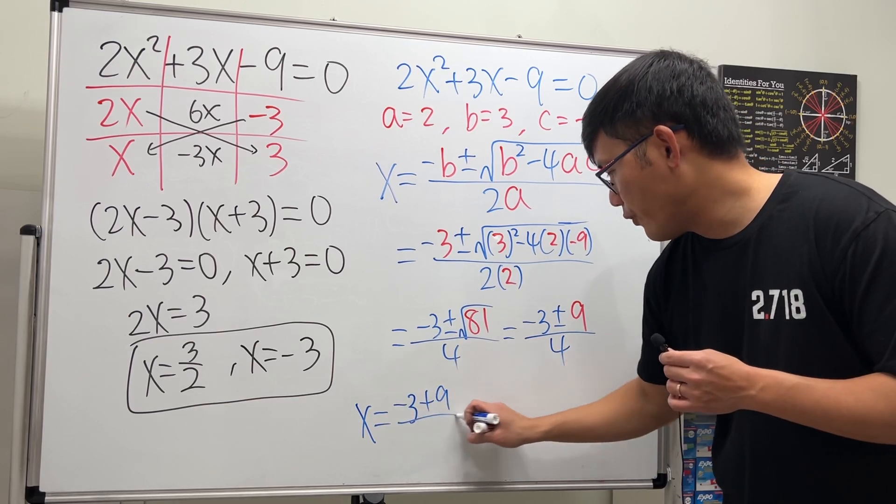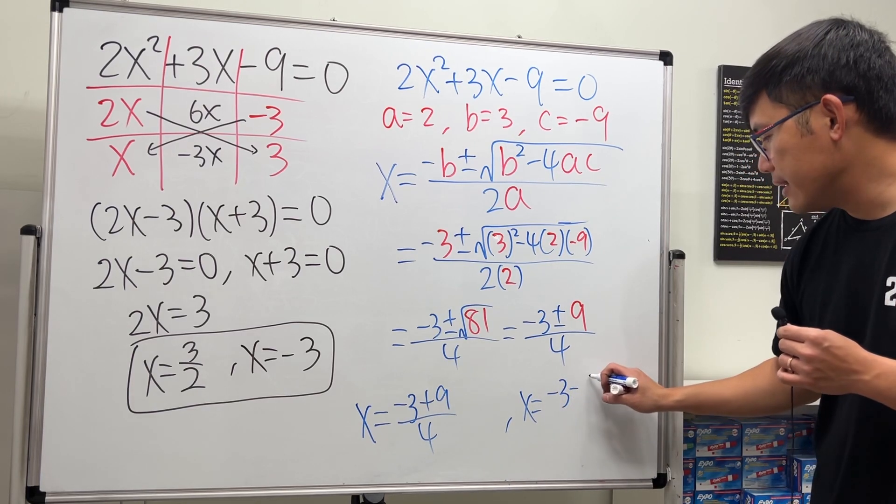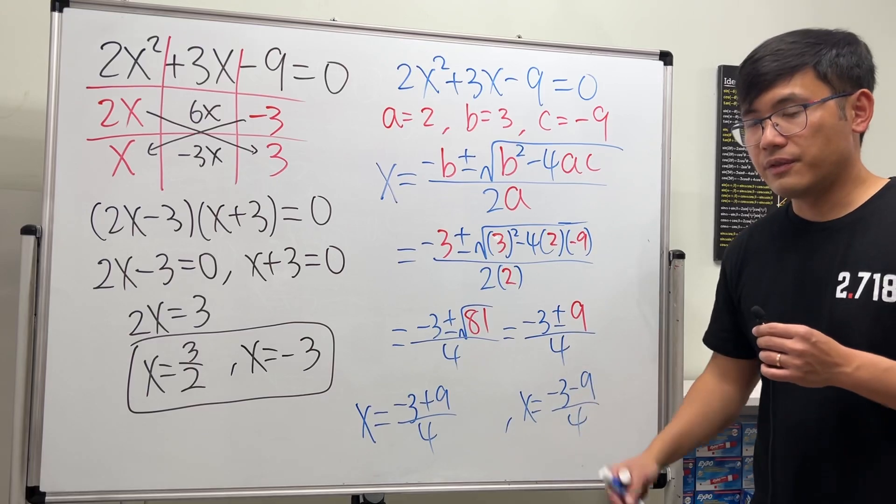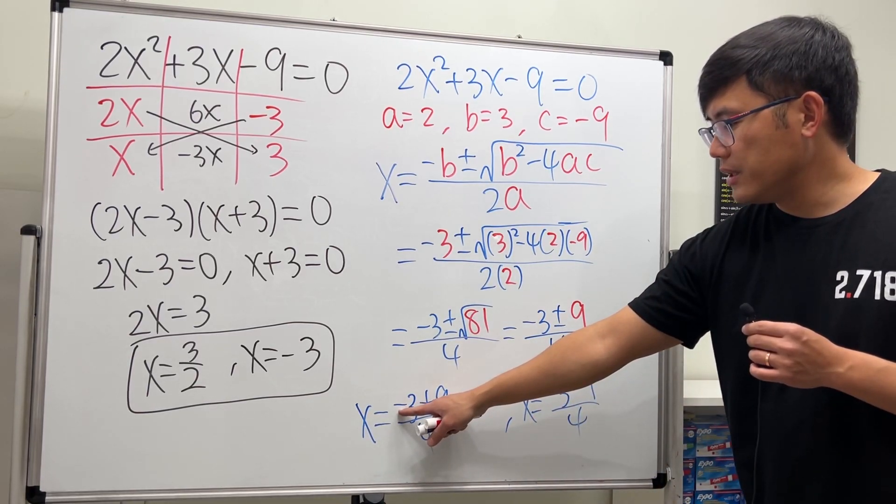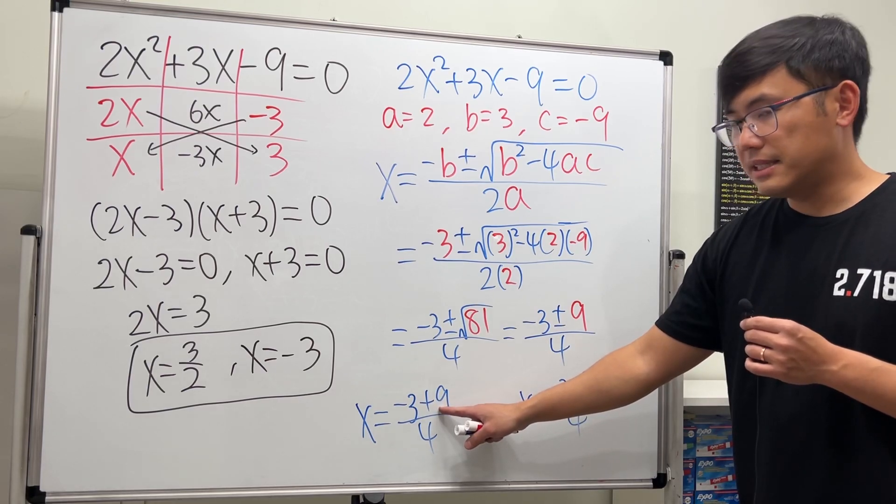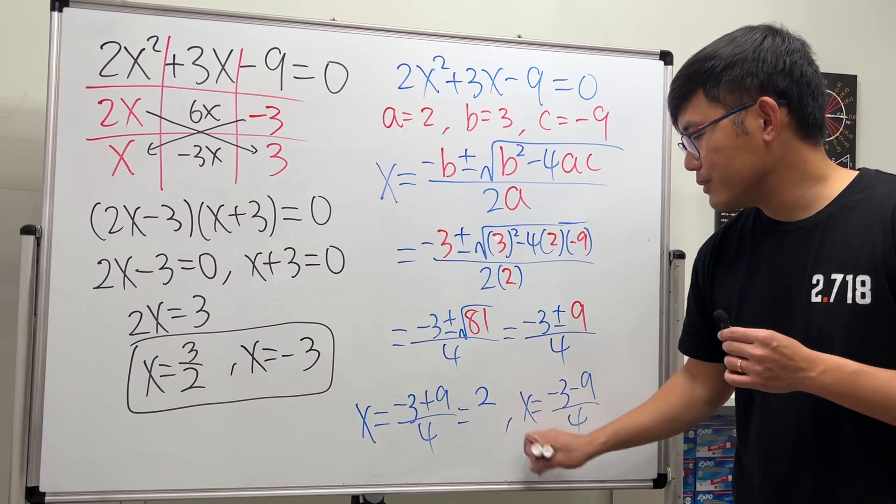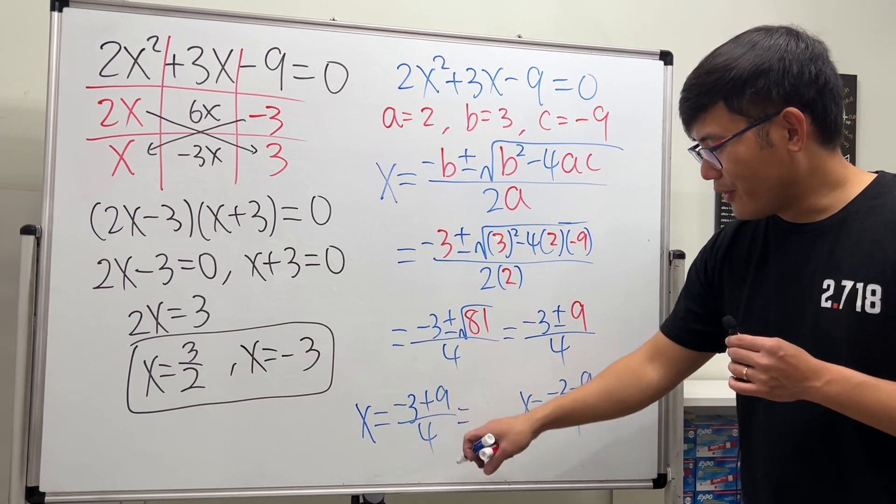So this means we have two answers: x equals negative 3 plus 9 over 4, or the other one is x equals negative 3 minus 9 over 4—the positive and the negative version. Of course we have to work them out. Negative 3 plus 9 is 6, 6 divided by 4 we get 3 over 2.